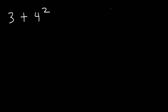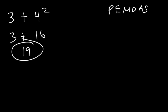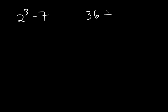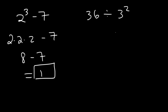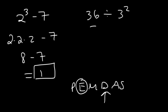Let's try some examples with exponents. What's 3 plus 4 squared? Exponents have more priority than addition, so 4 squared is 4 times 4, which is 16, and 3 plus 16 is 19. Next: 2 to the third power minus 7. 2 times 2 times 2 is 8, and 8 minus 7 is 1. Then: 36 divided by 3 squared. Exponents have more priority than division, so 3 squared is 9 first, and 36 divided by 9 is 4.